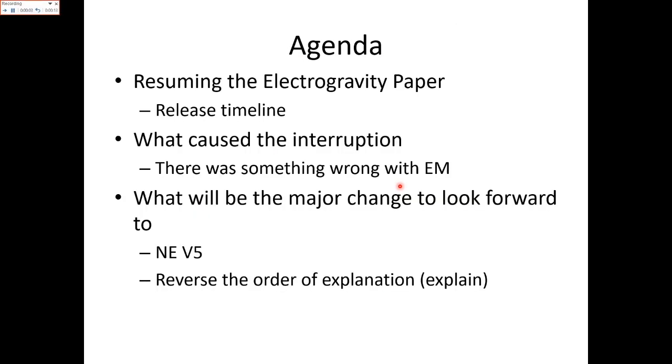I'm resuming the Electrogravity paper. We're going to show you the release timeline. The paper was actually started back in 2019 or 2020, but we had an interruption. I'll explain what the interruption was - we had something wrong with the electromagnetism. I'll tell you in this video what would be the major change to look for going forward, and that's new electromagnetism v5. I'm going to show that we're going to reverse the order of explanation.